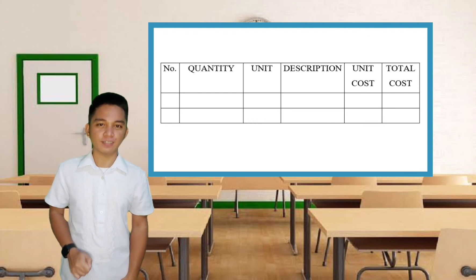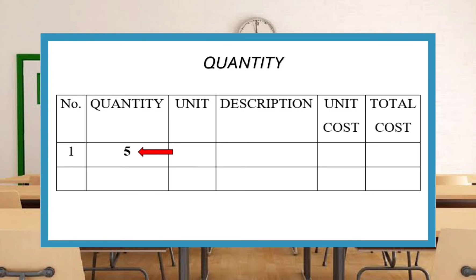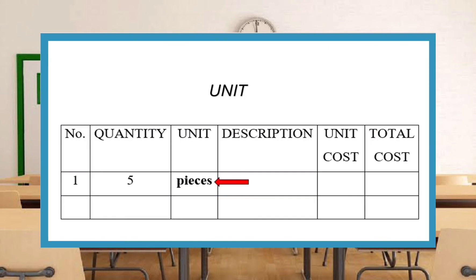This is how you fill out this form. We will start with item number — this is where the items are numbered. Say we have two items to request; we put one and two in this column. Next is quantity: the number of pieces of the requested items are placed here. For example, we request five pieces of screws, so we write five. Unit is the term used to indicate measurement — for example, kilogram, meter, and piece or pieces.